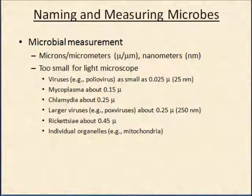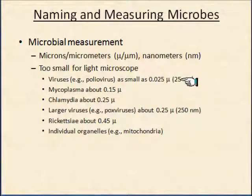We've been talking about microorganisms, and I mentioned that if you took a pinch of dirt between your fingers there would be about a billion microorganisms. What we use for microbial measurements are microns and nanometers. We're talking about viruses that are 25 nanometers. To give you an idea of what a nanometer is: traveling at the speed of light you could go around the earth four times in one second, but in a nanosecond you would travel one foot.